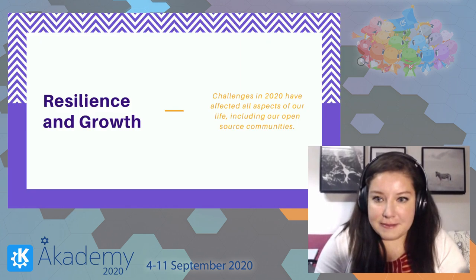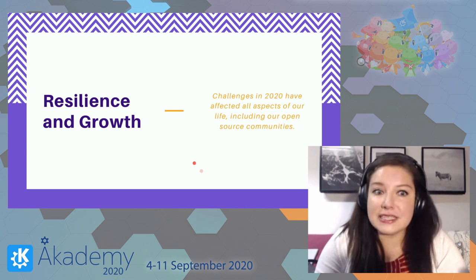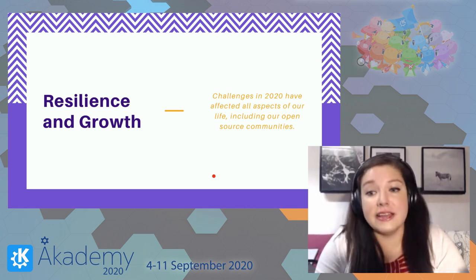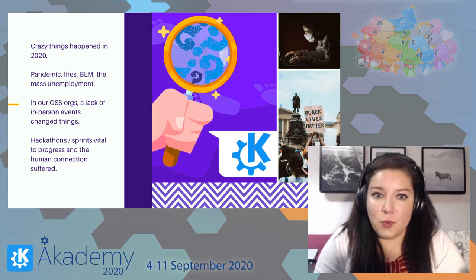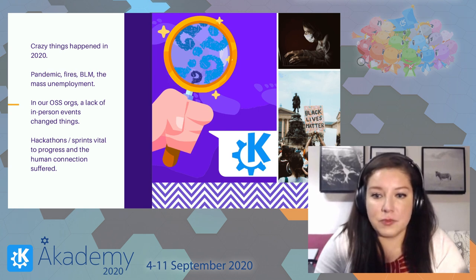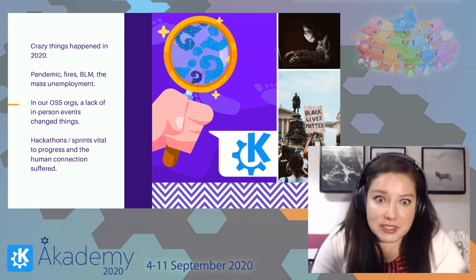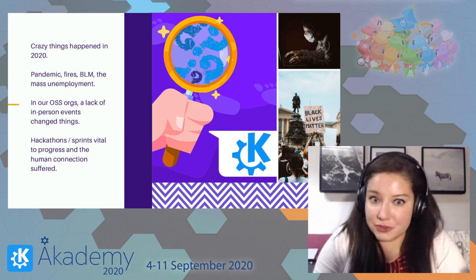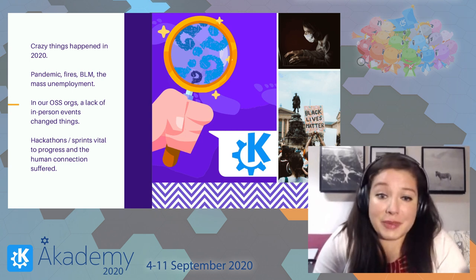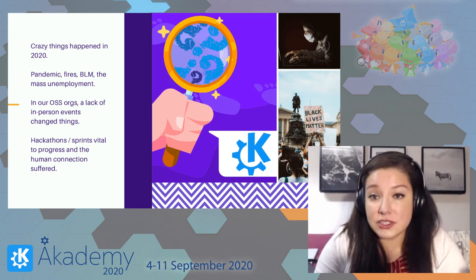This year has been really tough and it's included us all — our personal lives, our professional lives, and our open source communities. There has been a pandemic, there have been wildfires, there have been issues with racial and social justice. We've had to change our perspective through the Black Lives Matter fight, through lots of issues being surfaced in all areas of our lives. And there's been mass unemployment.